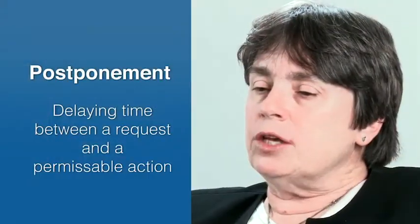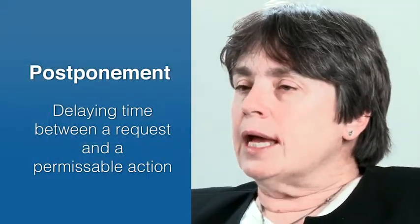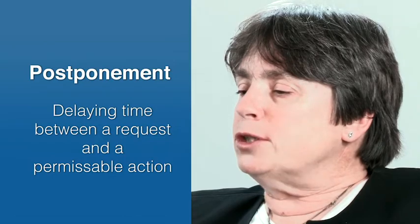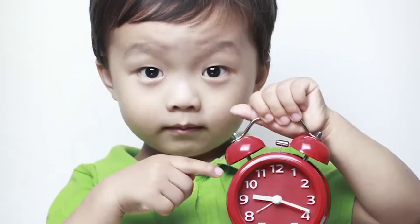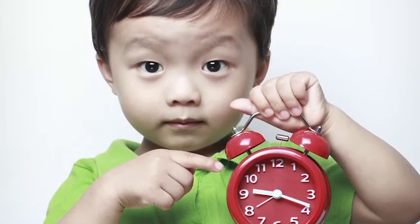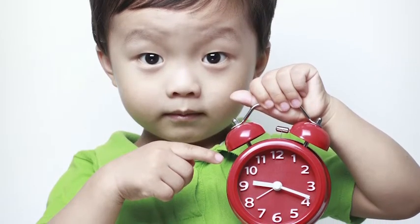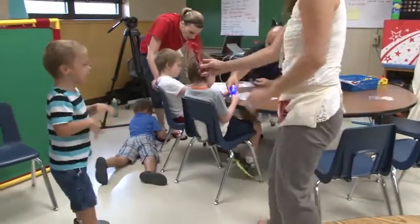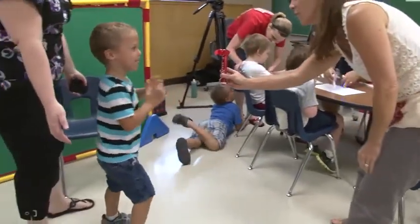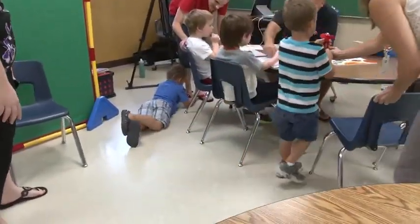Postponement is when you say, 'I can see that you would love to do that right now, and I really would love for you to be able to do that, but we're going to be waiting five minutes. Let's set a timer so we make sure that it's fair.' So you delay a little period of time between the child's request or demand and the actual time that they get to do it.